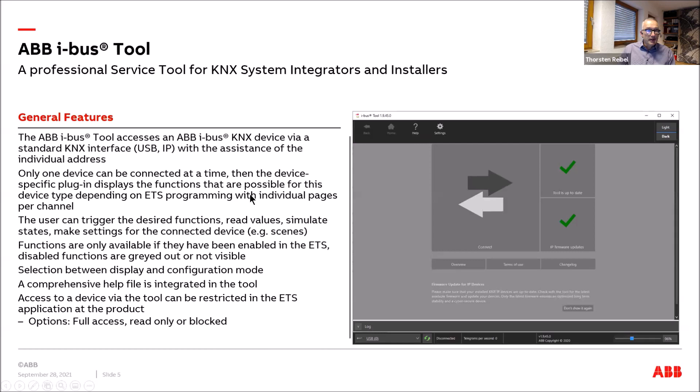From the tool you can trigger functions, read values, simulate states, and make settings — for example, store a new scene if available. These functions are only visible if they are enabled in the ETS via dynamic parameters. There are two modes: display mode, where you can only see values and actual status, and configuration mode, where you can also take action and operate functions.